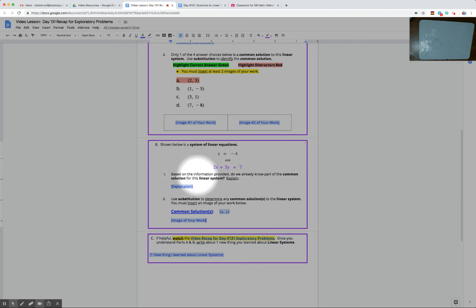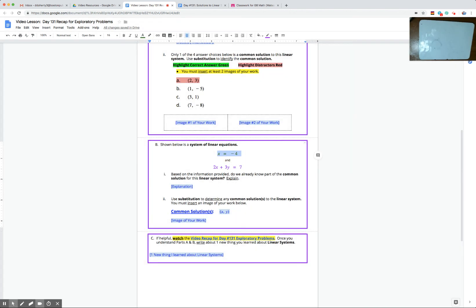Part one asked us, based on the information provided, do we already know part of the common solution for this linear system? So remember, a common solution to a linear system is going to be the value for x and y that works in both equations, and we should notice something about this linear system. The first equation says x equals negative 4. We know for a fact, without any doubt, the only common solution that can work for both equations must have an x value of negative 4, because that's the only x value that works in the green equation.